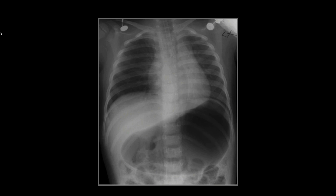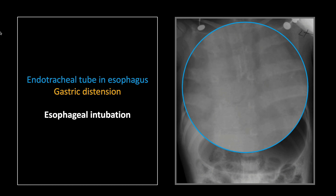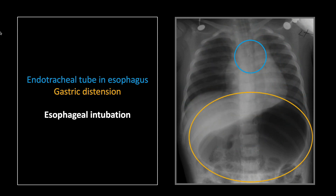Our next case is one of esophageal intubation — a relatively subtle case, at least as far as positioning of the endotracheal tube goes. You can see that the tip of the endotracheal tube does not lie directly above the carina; in fact, the entire tube does not quite overlie the tracheal air column, showing that it is in the esophagus, even though at first glance it might appear to still be in the trachea. Secondary findings are very helpful as well: there is extensive esophageal dilation and marked distension of the stomach, consistent with direct insufflation of the esophagus and stomach from this inappropriate endotracheal tube placement.